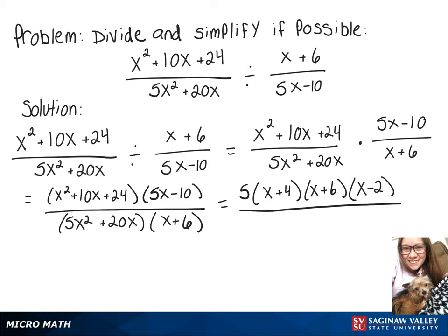On the bottom, in that first set of parentheses, we can factor out a 5x. And then that leaves x plus 4 and we've still got x plus 6.